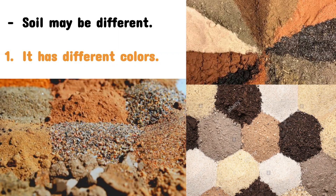Soil may be different — it has different colors. As you can see, this is a colorful slide. We have kind of white soil, yellowish soil, brown, dark brown. Sometimes we can have black soil, and we have orange as well. It is a mixture of colors — we can find very colorful soil.